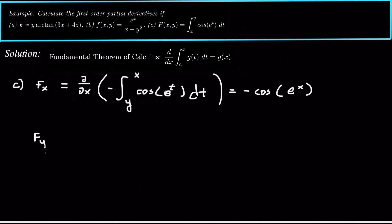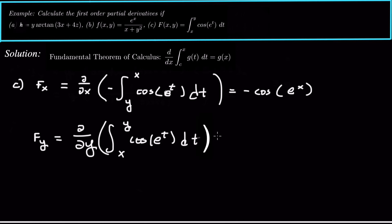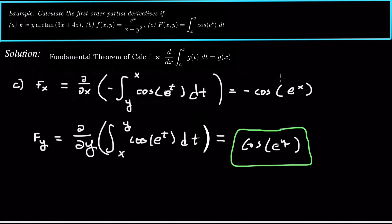The derivative with respect to y is more direct — we don't need to switch the bounds. Taking the partial derivative of the integral from x to y of cosine(eᵗ) dt with respect to y, we just plug y into the integrand: F sub y = cosine(eʸ). If the bounds had a harder function like 2y, you'd just multiply by the derivative of 2y. That's how we calculate these trickier partial derivatives.